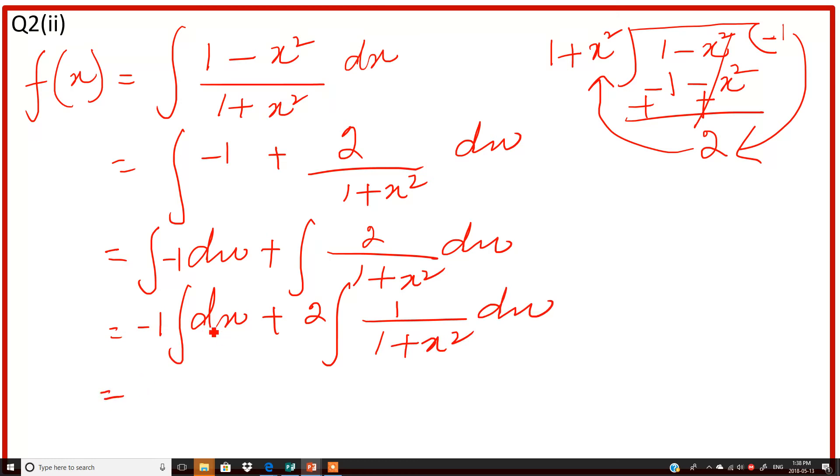The integration of dx is x, but we have negative, so it's -x plus 2. Here is the formula: the integral of 1 over (1 + x²) is equal to tangent inverse of the variable.